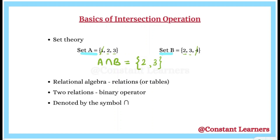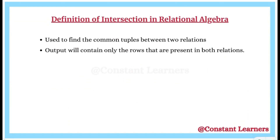Now in relational algebra, we apply a similar concept, but instead of sets, we are using relations or tables. Since intersection requires two sets, we also need two relations, and thus intersection operation is a binary operator. It is denoted by a symbol that looks like an inverted U. The intersection operation is used to find the common tuples between two relations — the output will contain only the rows that are present in both relations.